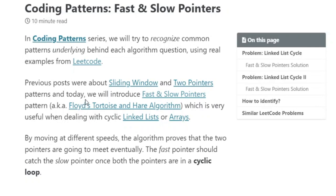What this means is that one pointer is going to move at a different speed than the other pointer, and they're going to eventually meet. One pointer is going to go super fast and the other one's going to go slow, and in the end they're going to meet sooner or later.